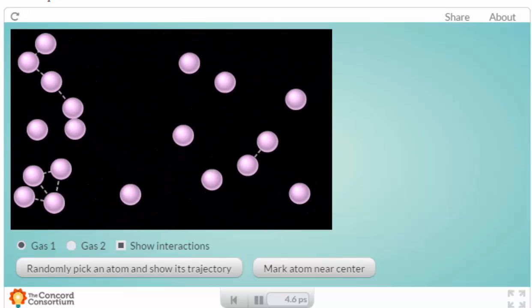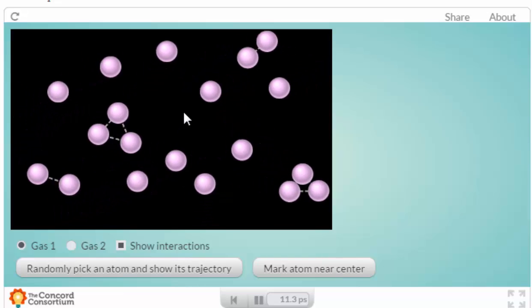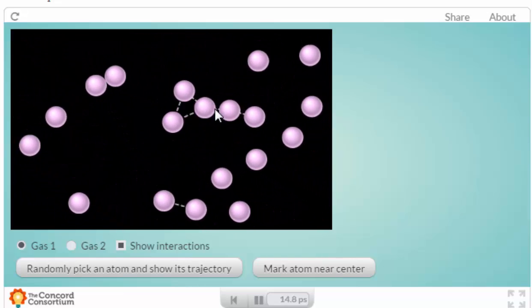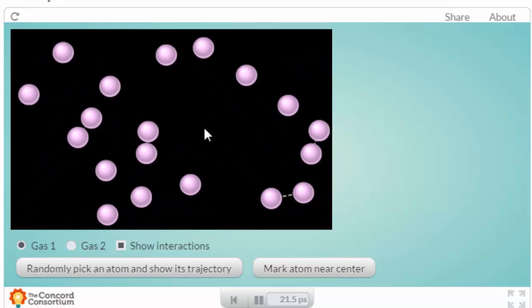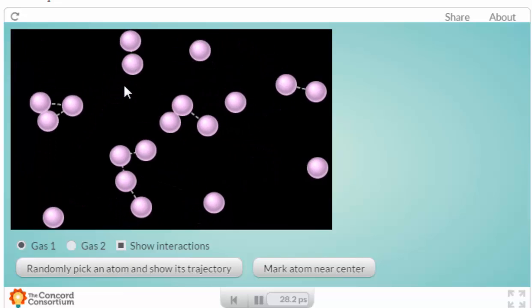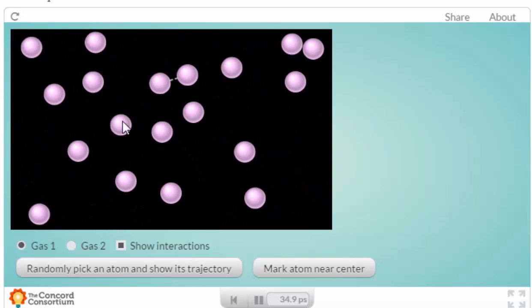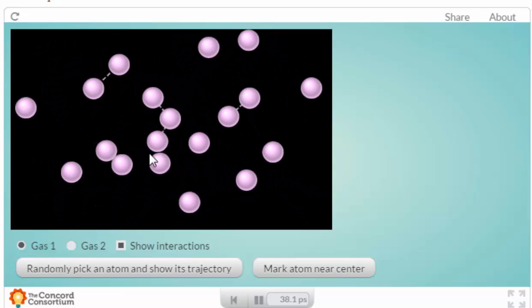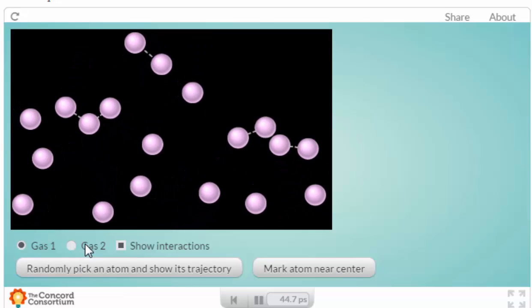You see those little white dashed lines? Those represent attractive forces between those atoms, and every particle, every atom, has an attractive force for another one. But some atoms, some types of matter, have stronger attractive forces than others. This gas doesn't have very many or particularly strong attractive forces, which is pretty typical of a gas. The particles are moving too fast for the attractive forces to matter, and when they hit each other they mostly just bounce off of each other.